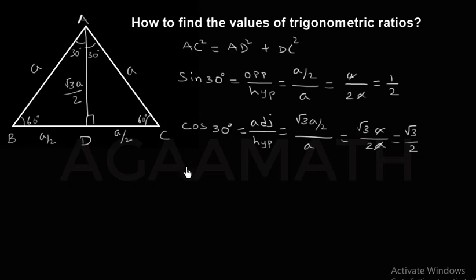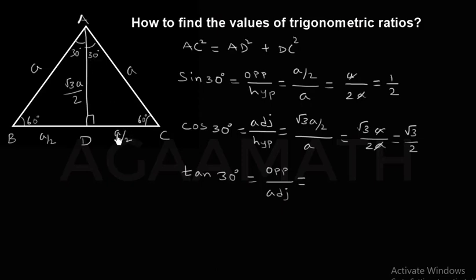Then tan 30 degrees. The ratio of tan is opposite side of theta by adjacent side of theta. The opposite side of theta is a/2, divided by adjacent side of theta, which is √3·a/2. When you simplify this, you get 1/√3. So tan 30 degrees = 1/√3.